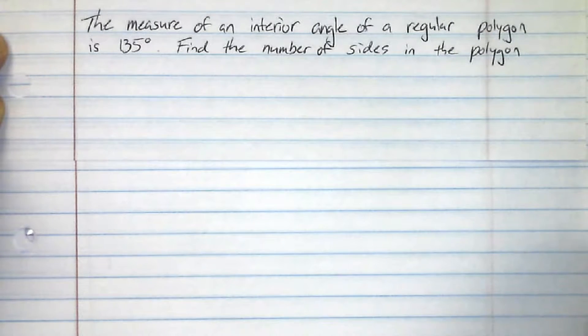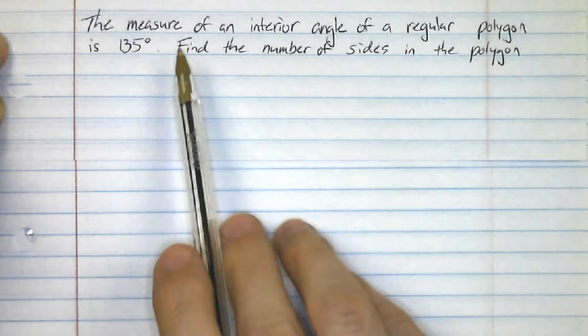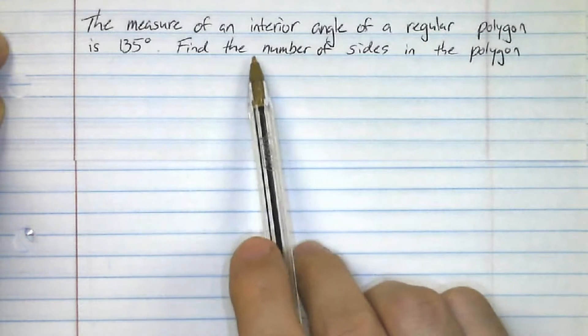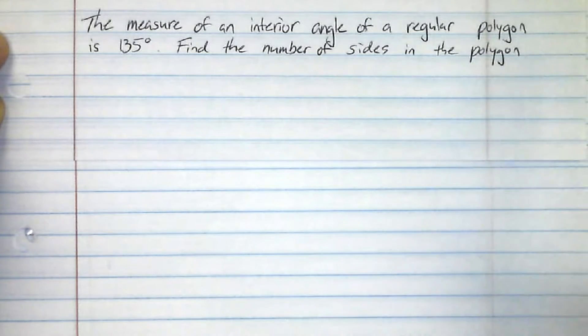Okay, so with this example right here, we're going to kind of work it backwards. It says the measure of an interior angle of a regular polygon is 135. Find the number of sides. So here we're trying to actually figure out what N equals. We have everything else.